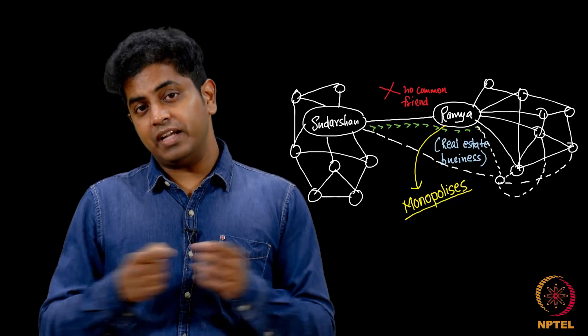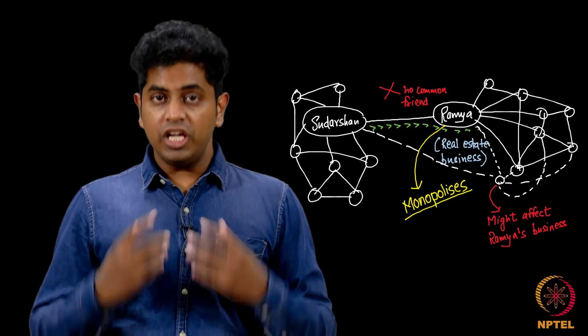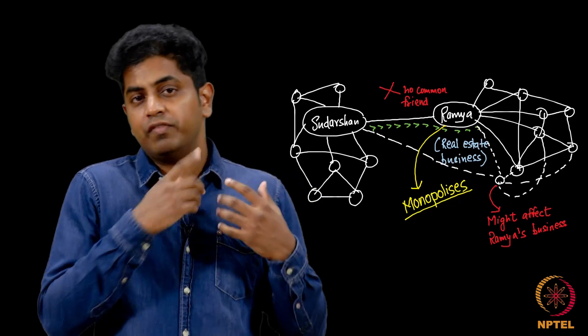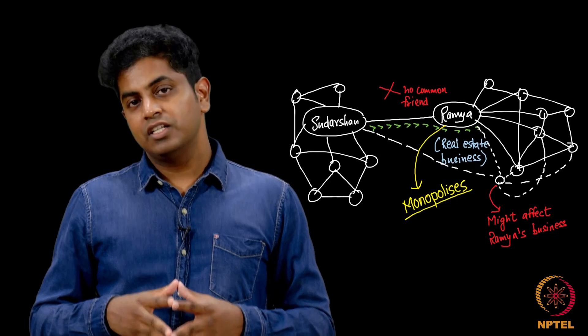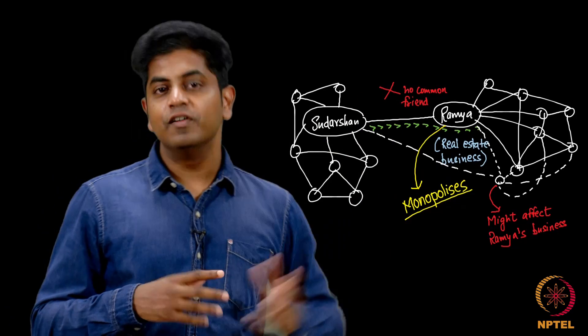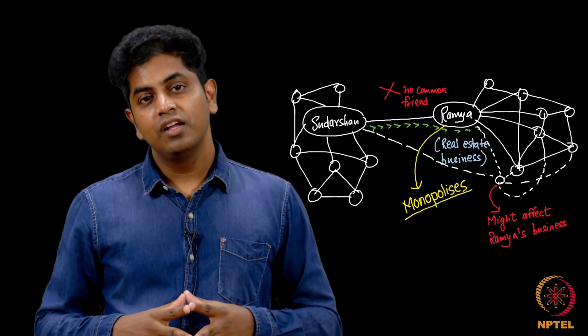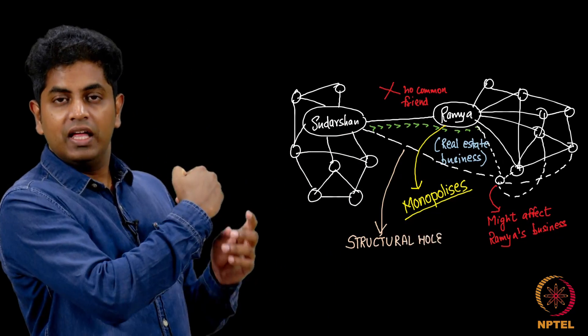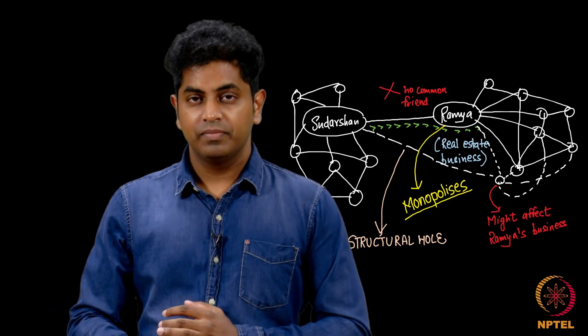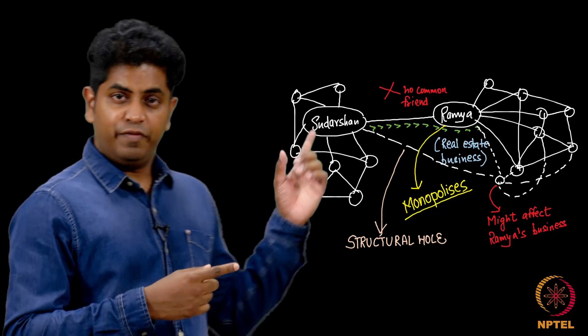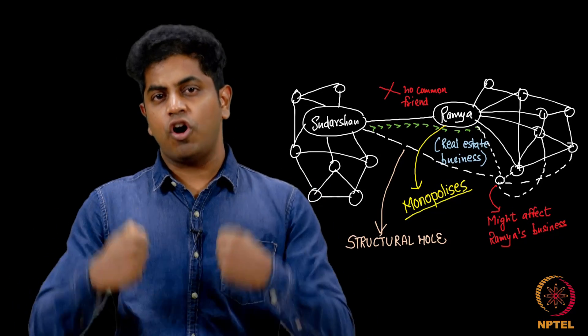Do you see what is called a hole here, a hole in this graph structure where a lot of people on this side - if they want to contact someone from the other side they have to go through a long chain of path. In fact, Sudarshan has to go through Ramya to contact anyone. Any friend of Sudarshan, as you can see, should go through Sudarshan through Ramya to contact the other world. Ramya holds a very strong position here.